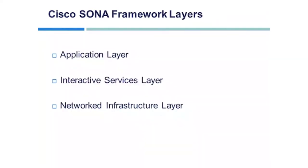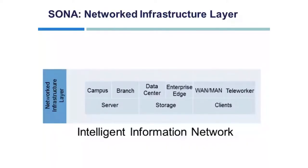The SONA Framework layers are: the Application Layer, the Interactive Services Layer, and the Network Infrastructure Layer. Starting with the Network Infrastructure Layer — this layer provides connectivity anywhere and anytime. All IT resources, including servers, storage, and clients, are interconnected across a converged network foundation. This layer represents how these resources exist in different places in the network — campus, branch, data center, WAN, MAN, and with the teleworker, whether that's a hotel, airport, remote site, or home.